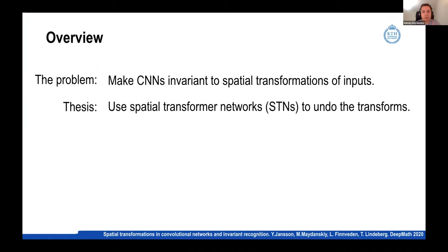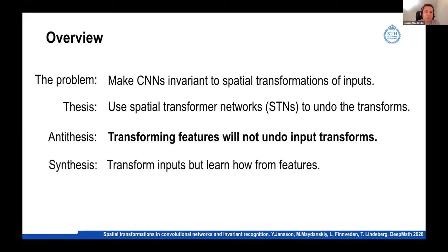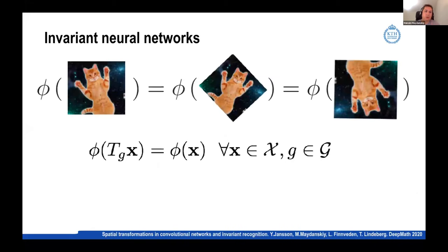But the thesis that has been proposed in one of the influential papers a few years back is to use so-called spatial transformer networks, abbreviated STNs, to undo the transformations of the inputs. And so the antithesis, which I will be focusing on today, is the observation that transforming features later in the layers of the network actually does not undo input transformations and cannot do this in a very robust sense. And so the synthesis developed in the follow-up paper with my other co-authors is that one can use this understanding to develop another framework where you transform inputs, but you learn how to transform them by using the features later in the network.